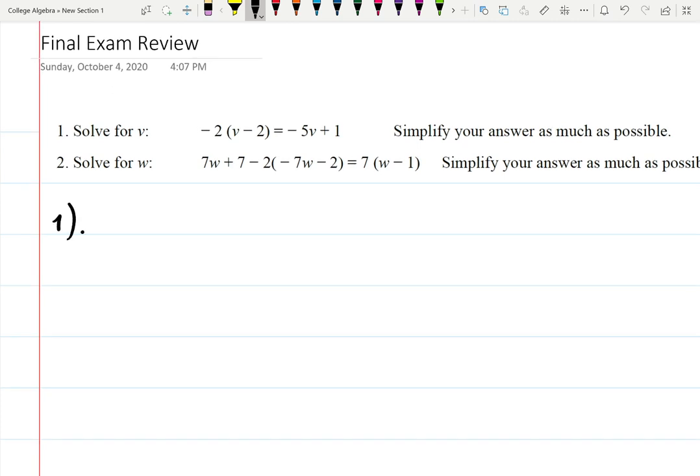For number one, I'm looking at -2(v-2) = -5v+1. First, I will distribute -2, which means I will multiply -2 by v and then by -2. -2 times v is -2v. -2 times -2 is +4 equals, and there is nothing to simplify on the right-hand side.